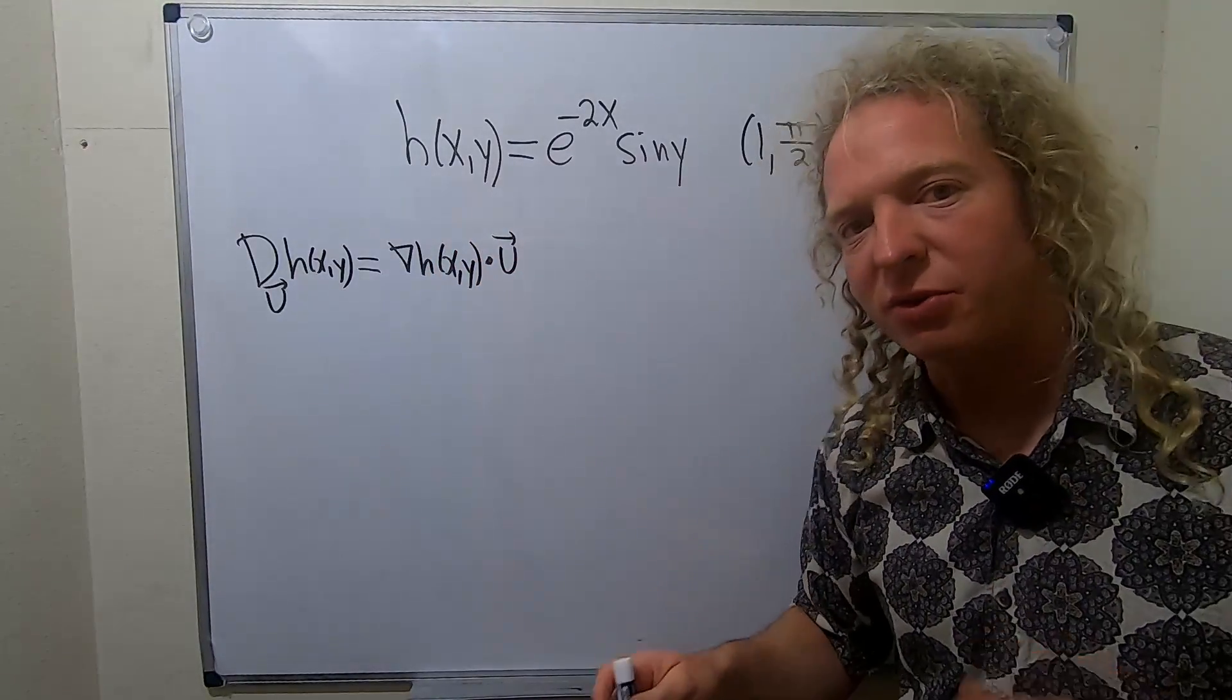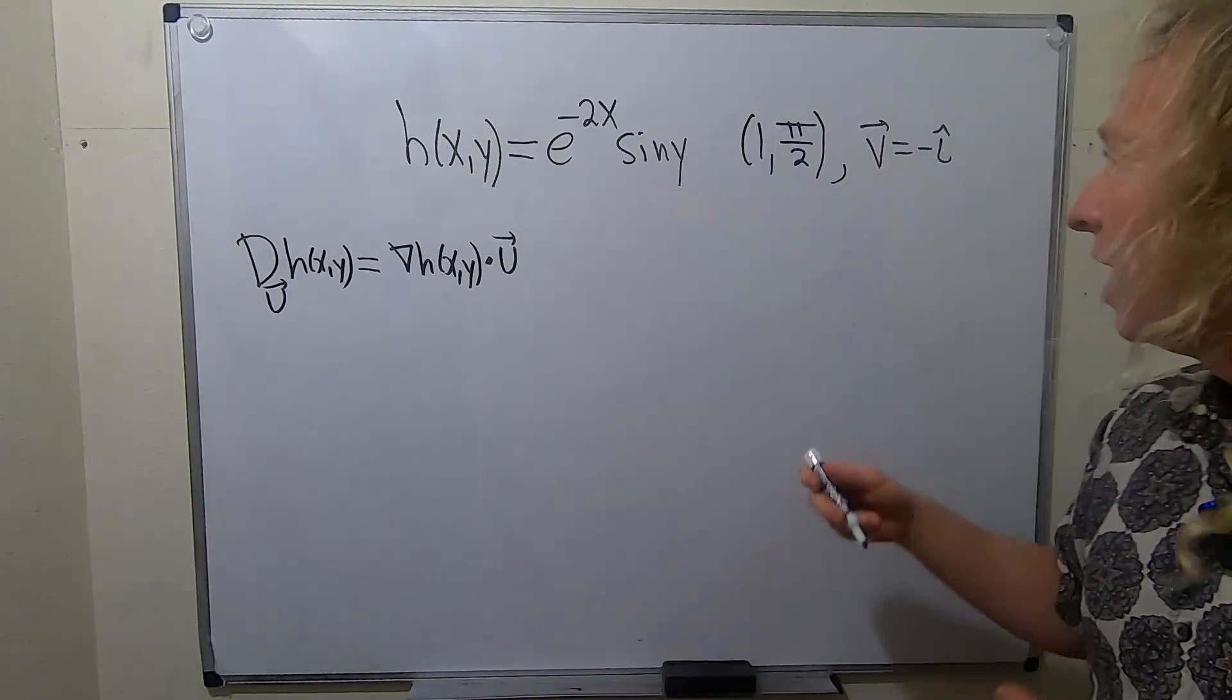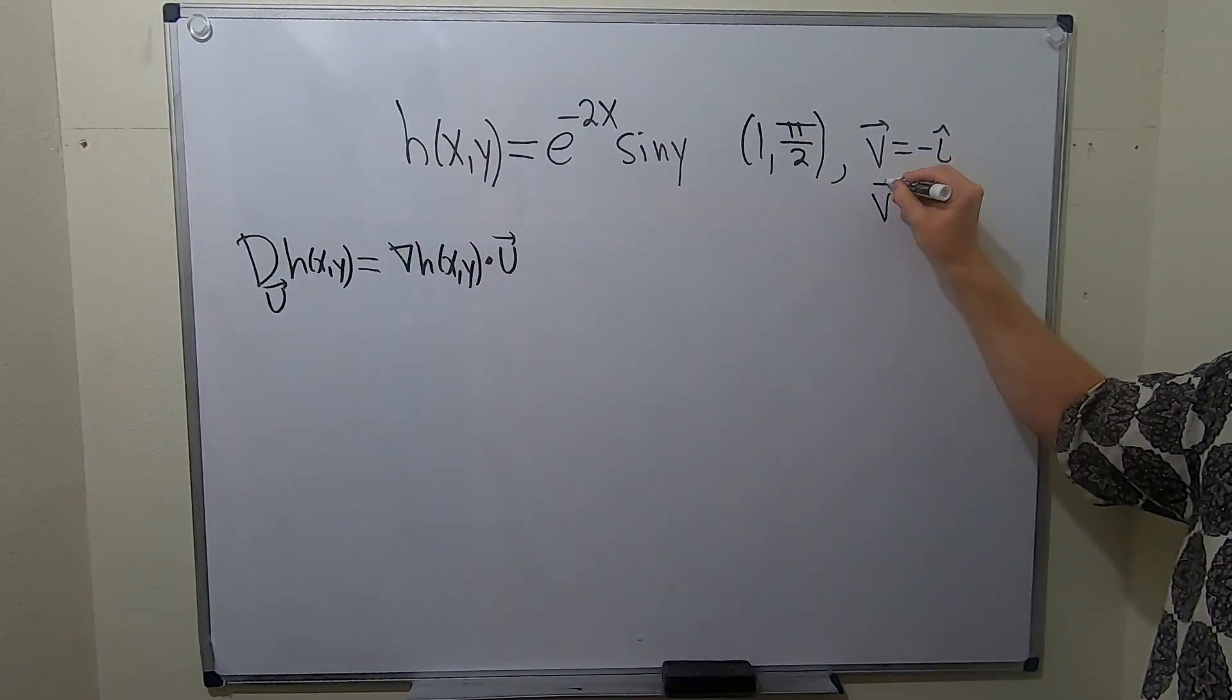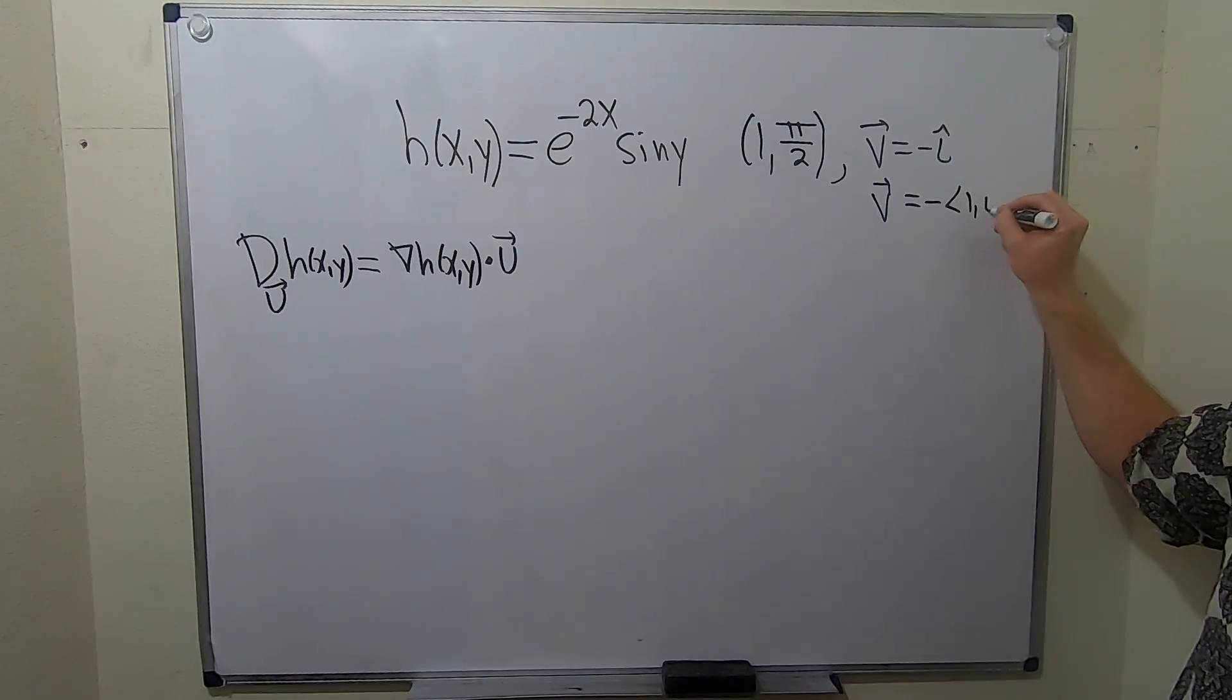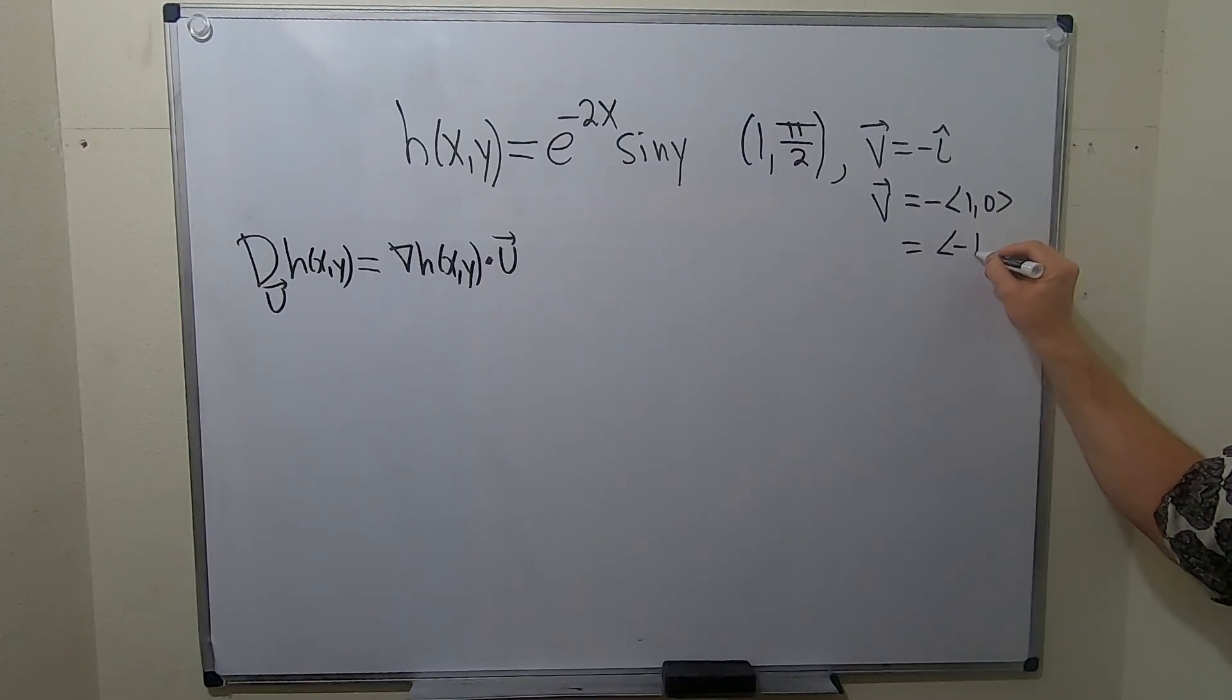So in this case, our unit vector is actually v. This happens to coincidentally and fortunately be a unit vector. So you can write this as negative i hat. i hat is 1, 0, so this is going to be negative 1, 0.